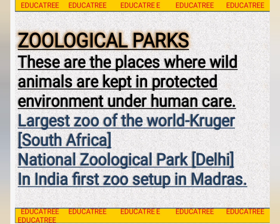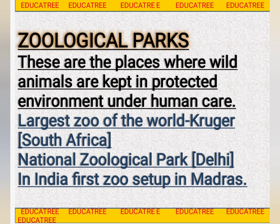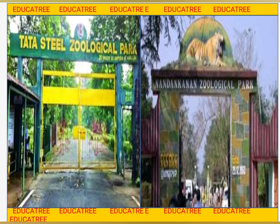The third taxonomical aid is zoological parks. It is similar to botanical gardens, but the difference is that in a zoological park, we do not preserve plants — instead, we keep animals in their protected environment under human care. A good example is the Delhi zoo. The largest zoo of the world is Kruger, in South Africa. The Delhi zoo is also called National Zoological Park. 'Zoological park' and 'zoo' are the same term — 'zoo' is just the short form. Our first zoo was set up in Madras.